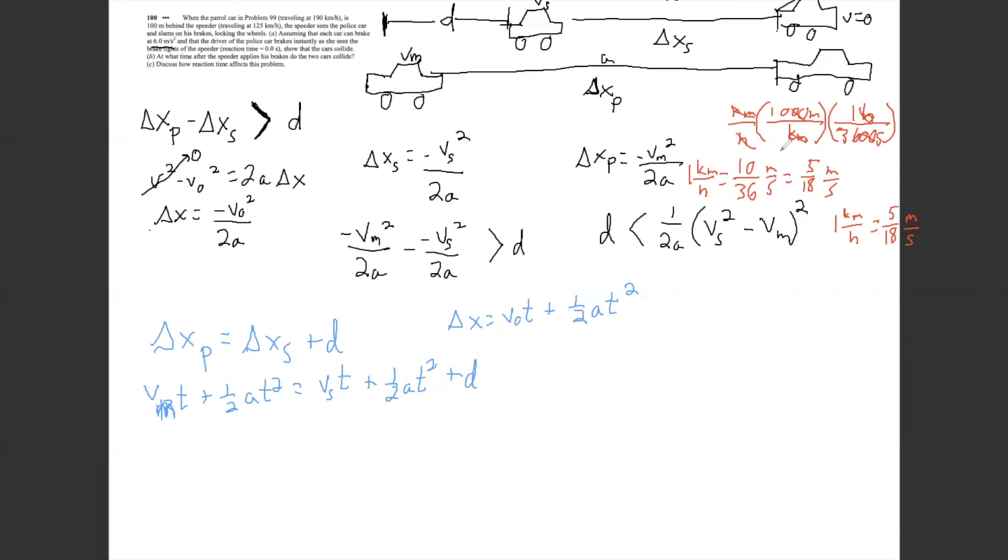Whereas here, we were looking at, in the first part, we were looking at what is the distance they would go if they didn't collide. If they didn't collide, how far would they go? And then we're trying to compare that amount to the separation distance, to the distance that they have to go. So here then you can solve for T here and then discuss how the reaction time affects this problem.